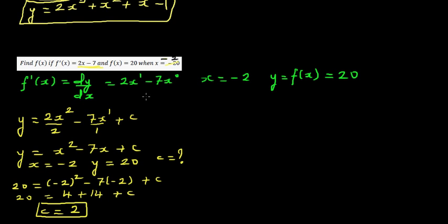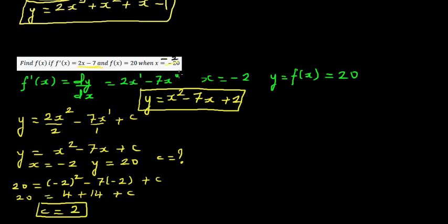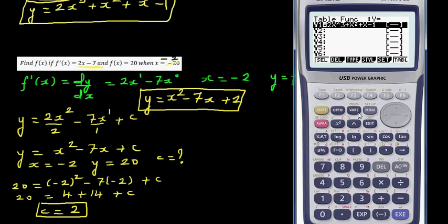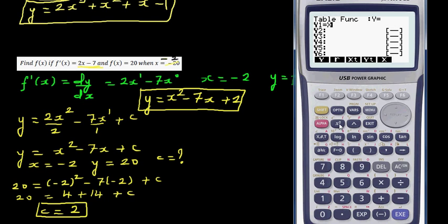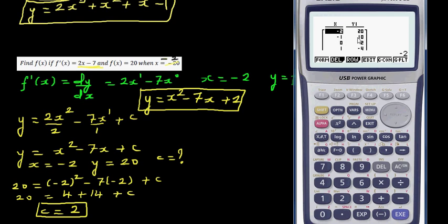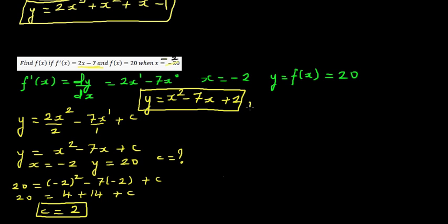So the equation of the function is y = x² - 7x + 2. To check your answer, enter this into the calculator's table menu: type x² - 7x + 2, set the start to x = -2, and verify that the y value is 20. The table confirms y = 20, so your answer is right.